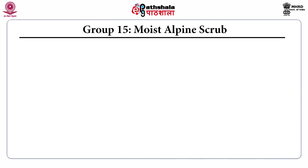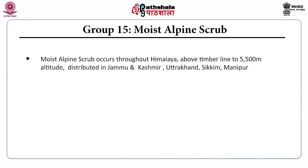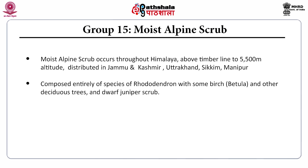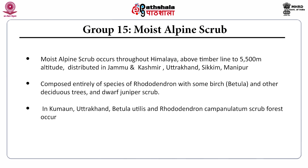Group 15, the moist alpine scrub, occurs throughout the Himalaya above the timber line to 5500 meters altitude. Distributed in Jammu and Kashmir, Uttarakhand, Sikkim, and Manipur. Composed entirely of species of Rhododendron with some birch and other deciduous trees and dwarf juniper scrub. In Kumaon, Uttarakhand, Betula utilis and Rhododendron campanulatum scrub forest occur.